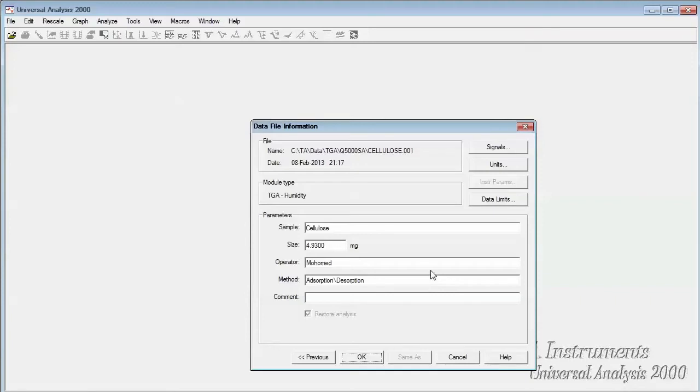In the data file information window, you will note sample name, sample size, operator, as well as methods and comments. Select OK.